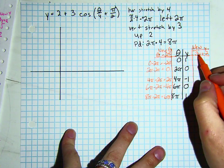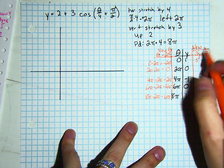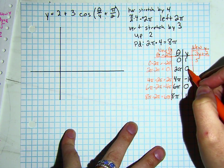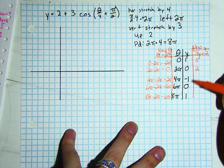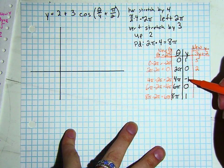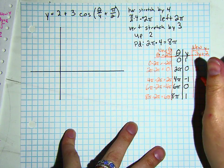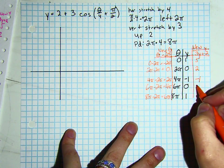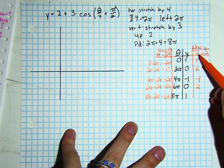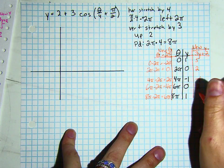So, 1 times 3 plus 2 is 5. 3 times 0 plus 2 is 2. 3 times negative 1 plus 2 is negative 1. 3 times 0 plus 2 is 2. 3 times 1 plus 2 is 5.